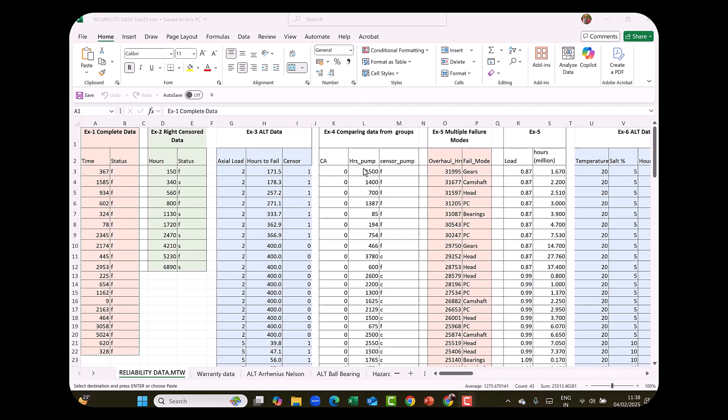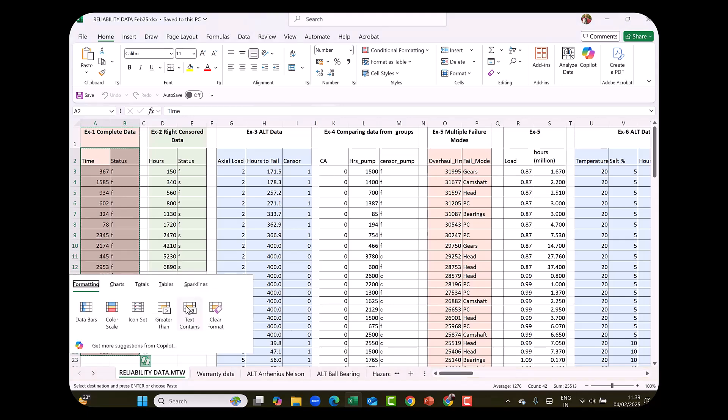I have opened the Reliability Data file. The first worksheet in the file is Reliability Data Point MTW. And we will use data from example 1 which is complete data. In complete data, we know the time to failure of each of the components being tested or in field. So this is the data, time and status. The status F means failed. Copy the data as shown.